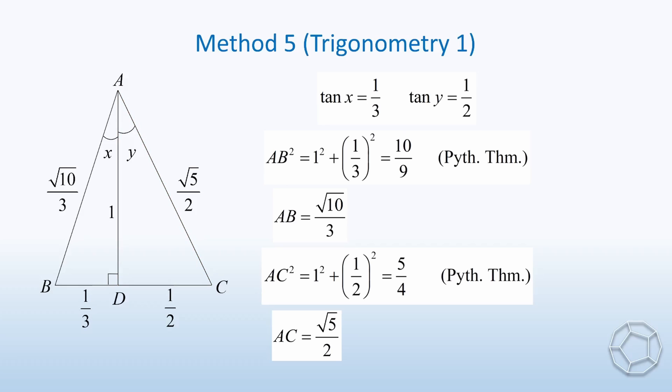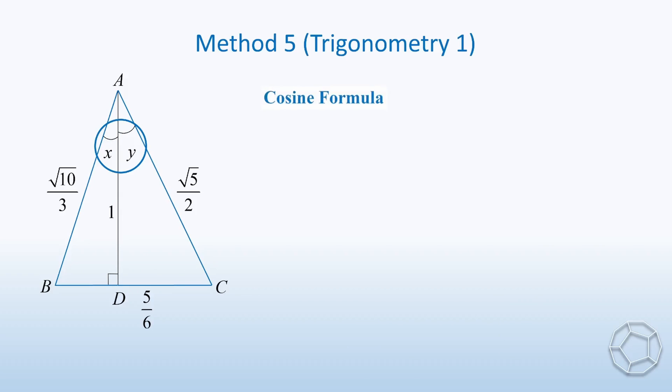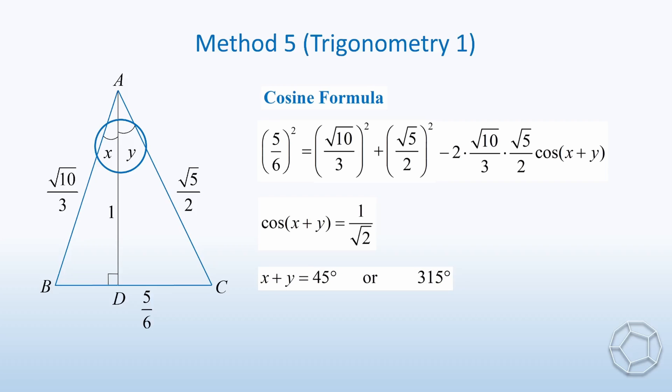How to make use of these lengths? Now, the horizontal side BC is equal to 5 over 6. And here's the thing. If we treat angle x plus y as a whole, then we can apply cosine formula. The left-hand side is the square of opposite side BC. While on the right-hand side, we have the sum of squares of the other two sides. Together with minus 2 times the two lengths cosine bracket x plus y. After simplification, we get the value which is equal to 1 over square root 2. So x plus y is equal to 45 degrees or 315 degrees. However, the second value is rejected. It is because it is an angle in the triangle. So it must be smaller than 180 degrees. There is only one possibility for x plus y.